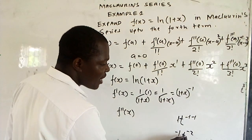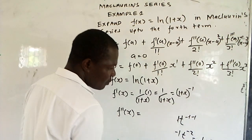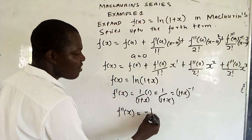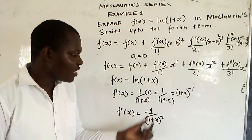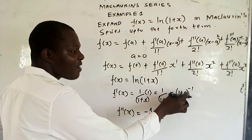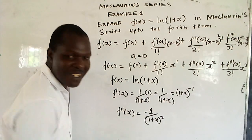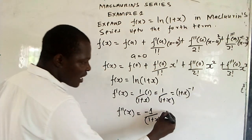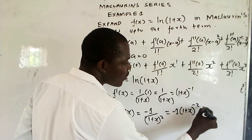So you get negative 1 over (1 + x) squared, because negative 2 means it is in the denominator. Then you differentiate the inner function: differentiating 1 gives 0, differentiating x gives 1, so you just remain with that. This can be written as negative 1 times (1 + x) raised to negative 2.